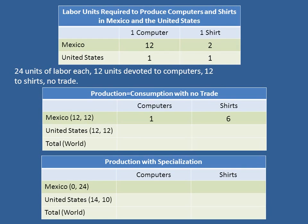In the United States, it's even easier, because it just takes one unit of labor to get one computer and one unit of labor to get one shirt. Therefore, if you devote 12 units of labor to computers, you get 12 computers, and 12 units of labor to shirts, you get 12 shirts. So the total world production is 13 computers and 18 shirts.